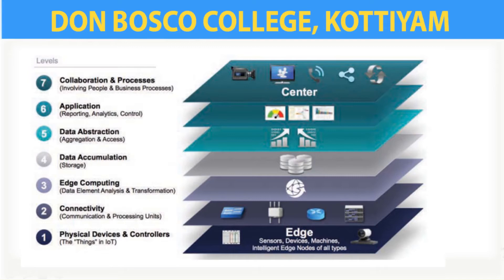The different layers are: the first one is physical devices and controllers, the second one is connectivity, the third one is edge computing, then data accumulation, then data abstraction, then application, and the seventh layer is collaboration and processes.